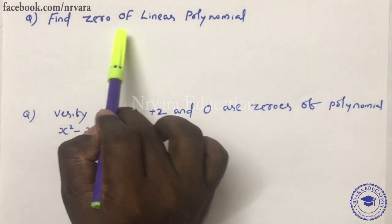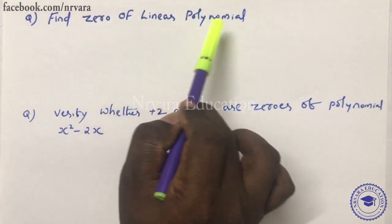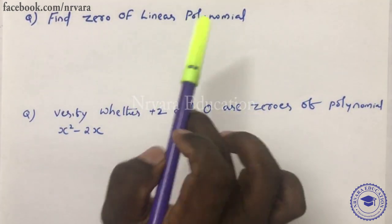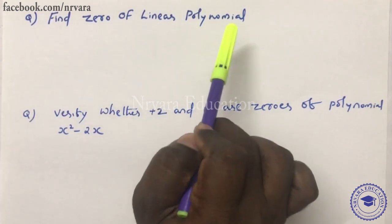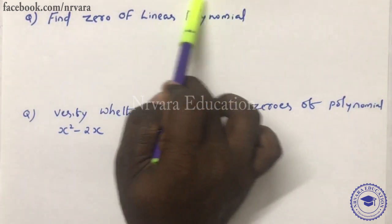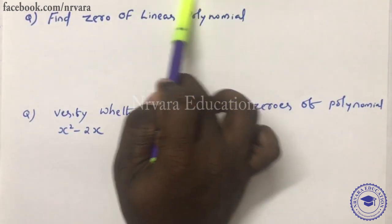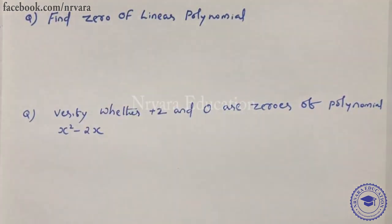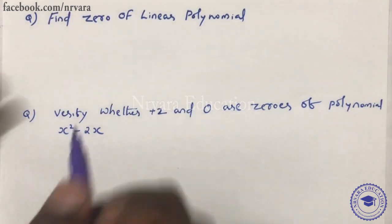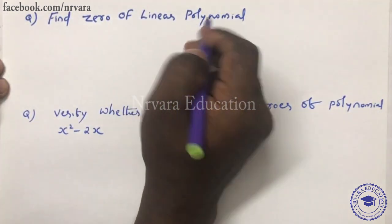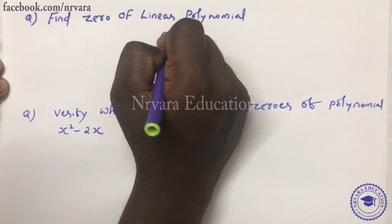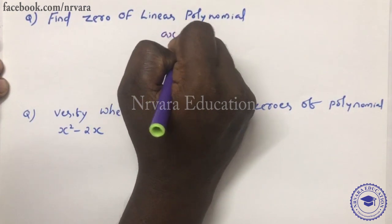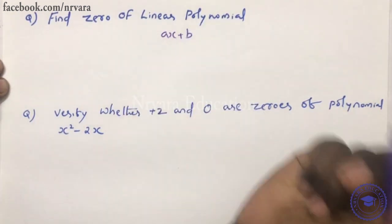Now, find the zero of a linear polynomial. A linear polynomial is written as ax plus b. That is, P of x equal to ax plus b.